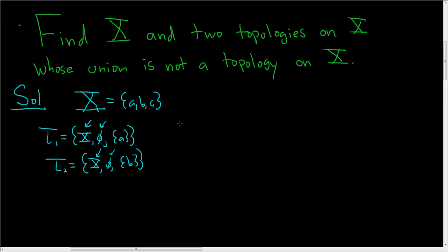The interesting thing happens when we take the union. Well, the union is going to be x, the empty set, the set containing a. And now we also get the set containing b. And this is not a topology on capital X.